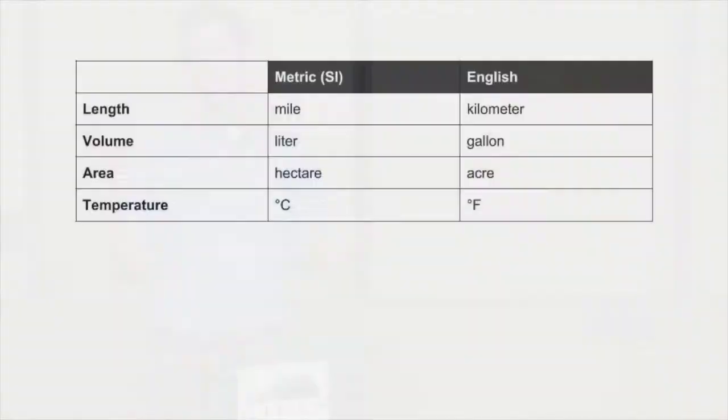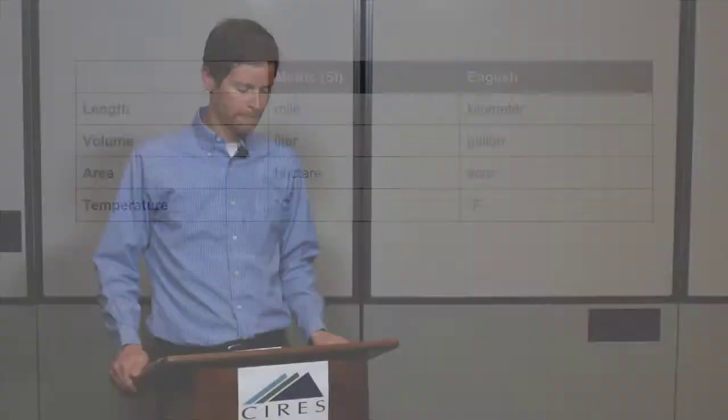First up let's talk about the English system. That's the system by which the United States generally measures things and it's particularly important in the area of water resources management. The English system unfortunately does not lend itself to easy conversions. Those of you from outside the United States or from scientific backgrounds are probably more familiar with the metric system. Water resources management in the west is entirely done in English units and much of the research related to it is also done using English units.